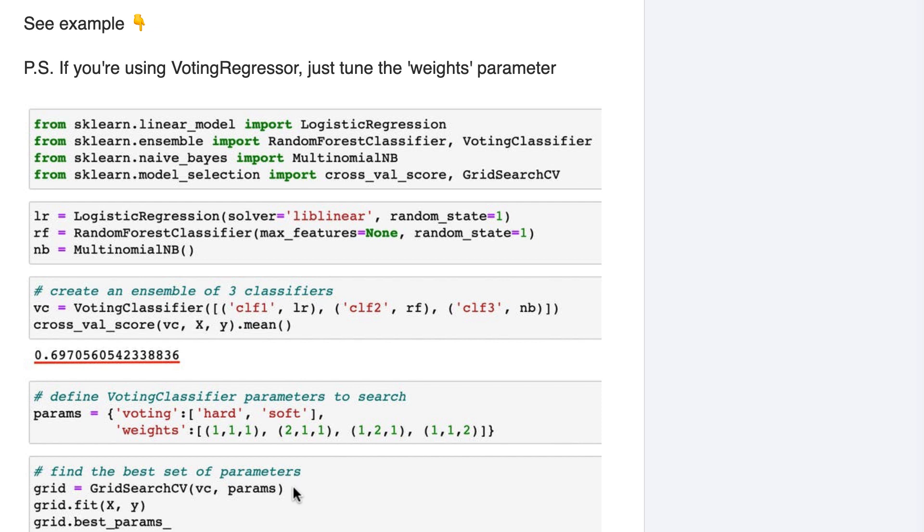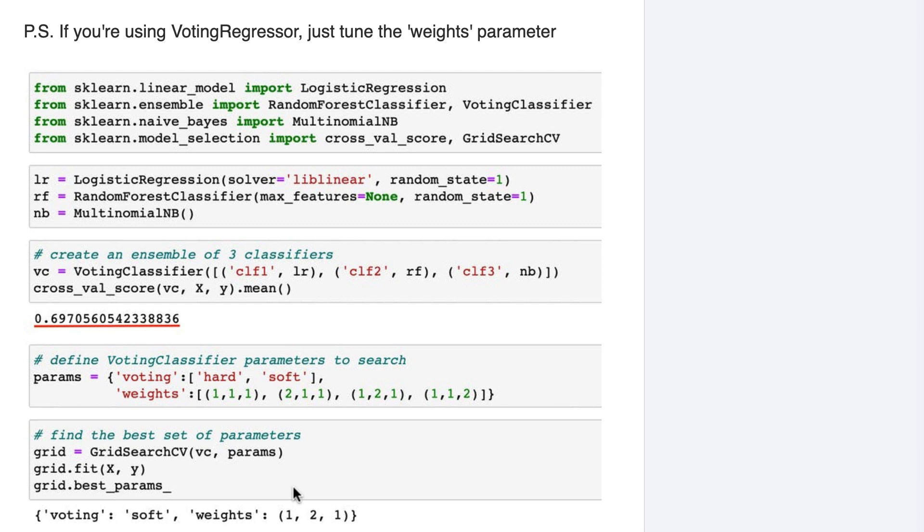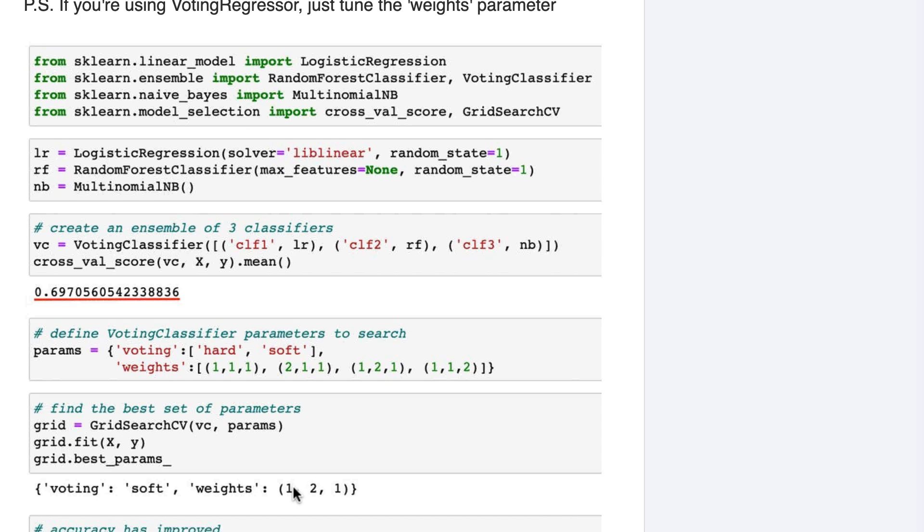We run the GridSearch, and it determines that the best parameters in this case were soft voting and a weight of 1, 2, 1, which means giving the random forests model double the voting power of the other models. By changing the ensemble to use those parameters, the accuracy of the ensemble has improved to over 72%.